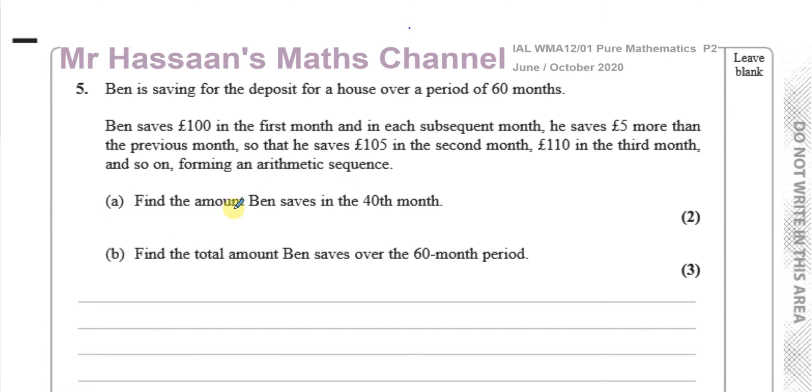We've got to find the amount that Ben saves in the 40th month, and the total amount that Ben saves over the 60-month period.